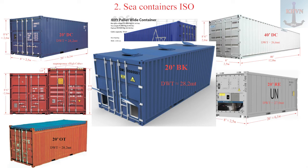A feature of the bulk container is the presence of two hatch systems. The upper hatch system allows quick horizontal loading. The lower hatch system, by tilting, accelerates unloading without using human labor. Available in both 20 and 40 foot. Characteristics are close to standard.